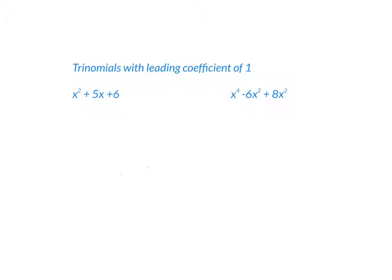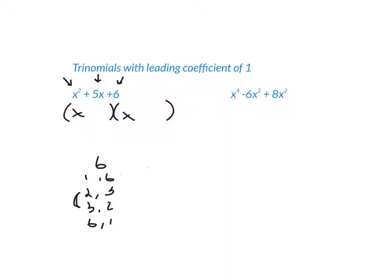For a trinomial with a leading coefficient of 1, you'll have two parentheses. The first term in each parenthesis multiplies to give x², so it's x and x. To find the other terms, take the last number and list its factors — for 6: (1,6), (2,3). Find the pair that adds up to the middle term, which is 5. That's 2 and 3, so the answer is (x + 2)(x + 3). You can check using FOIL to verify you get back to the original.